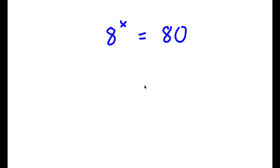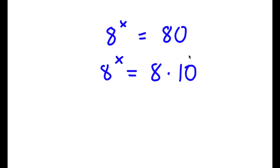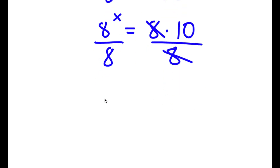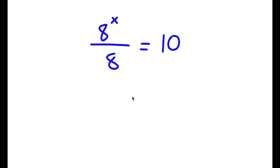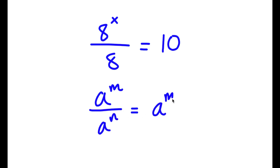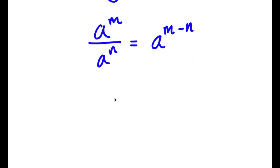In this problem, I have 8 to the power of x is equal to 80. I'm going to first start by rewriting 80 as 8 times 10. So I have 8 to the power of x is equal to 8 times 10, and now I'll divide both sides by 8. Using the rule a to the power of m over a to the power of n equals a to the power of m minus n, and since 8 is 8 to the power of 1, I get 8 to the power of x minus 1 is equal to 10.